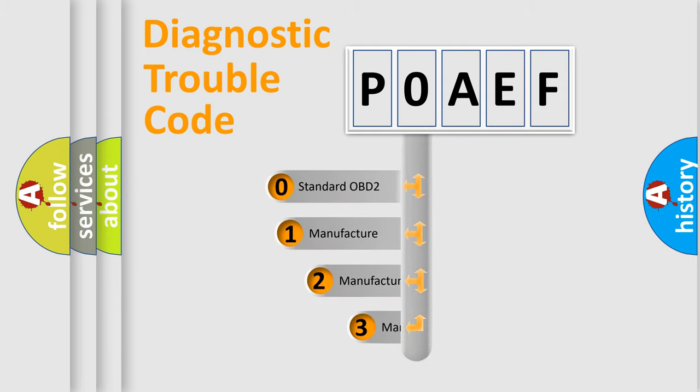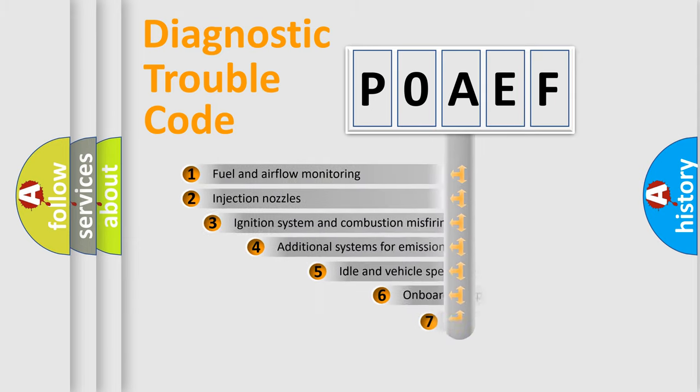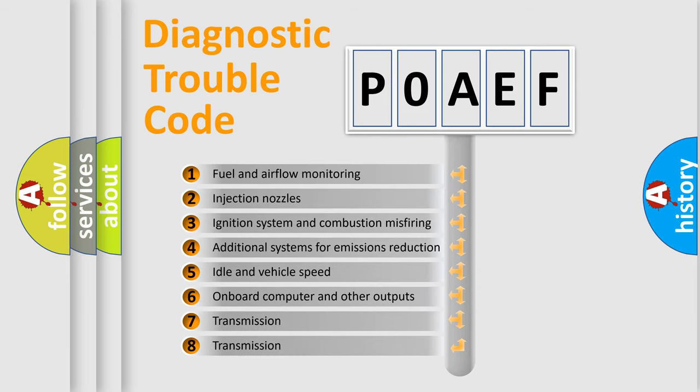If the second character is expressed as zero, it is a standardized error. In the case of numbers 1, 2, 3 it is a more precise expression of the car-specific error. The third character specifies a subset of errors.